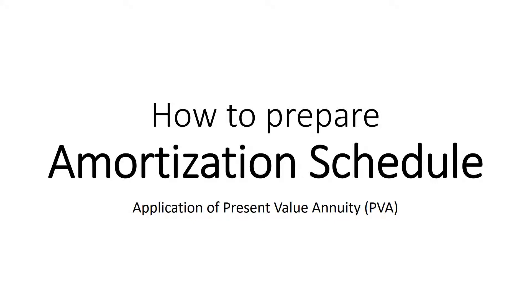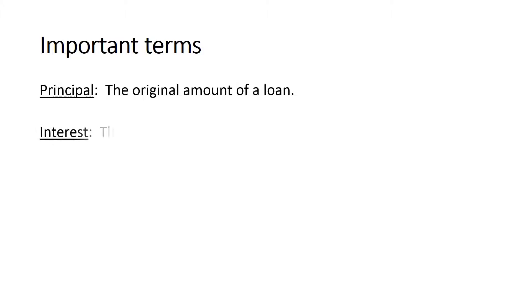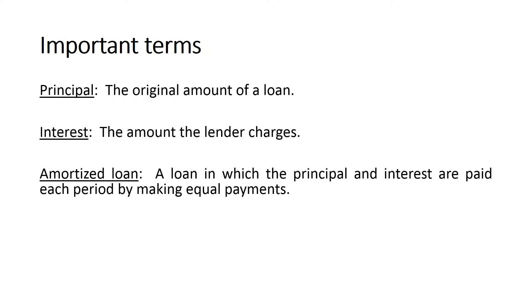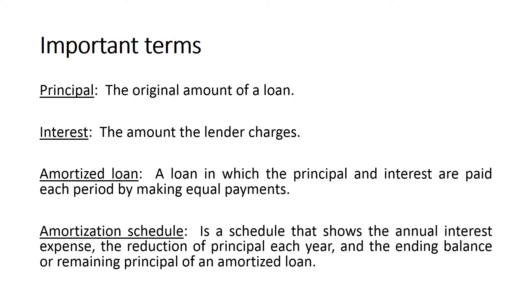In this video I will show you how to prepare an amortization schedule, which is an application of the present value of an annuity. Before we get started, it's important to understand some terms: principal, which is the original amount of a loan; interest, the amount the lender charges; and amortized loan, a loan in which the principal and interest are paid each period by making equal payments. Loans have different payment schemes — the amortized loan is one of them. Another type is the discount loan, in which the borrower pays the principal and interest at maturity. This video is particularly about the amortized loan, and finally the amortization schedule, which shows the annual interest expense, the reduction of principal each year, and the ending balance of an amortized loan.